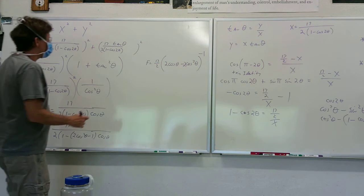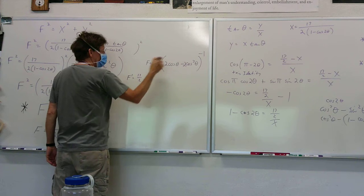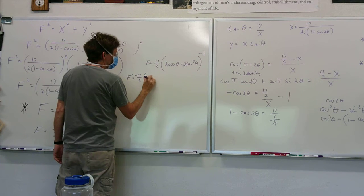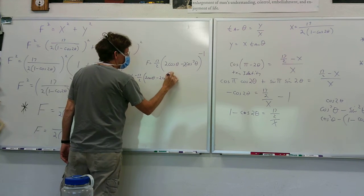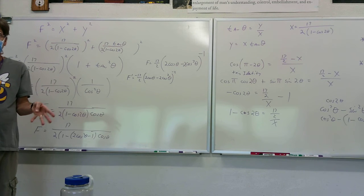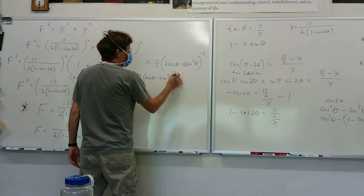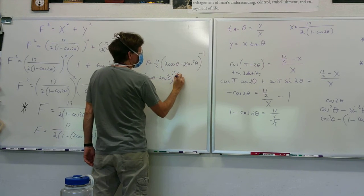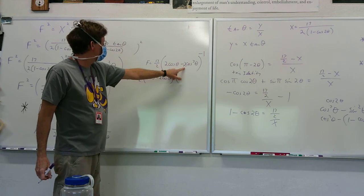F prime equals 17 halves times negative 1, all of that in parentheses raised to negative 2. If it's to the negative 2 that puts it in the denominator — which probably won't affect where it equals 0, though it could affect where it's undefined. Then I take the derivative of what's in the parentheses: derivative of cosine theta is negative sine theta. Mr. Evans realized you should have factored out a 2 from both terms.